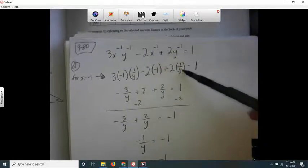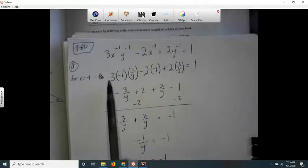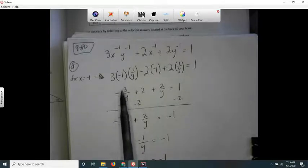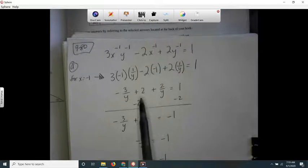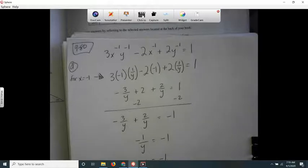So I rewrote it so that's negative 3 times 1 over y, which I can write as negative 3 over y. And then negative 2 times negative 1 is 2, and then this can be written as 2 over y. Then I subtracted 2 on both sides to get the y's alone.